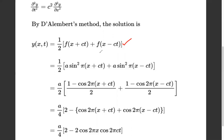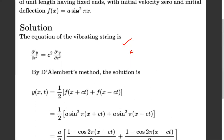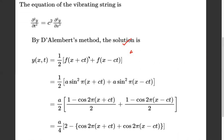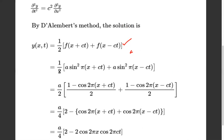Now f(x) = a·sin²(πx) is given. So y(x, t) = (1/2)·[a·sin²(π(x + ct)) + a·sin²(π(x - ct))], where we simply replace x with (x + ct) and (x - ct) respectively.